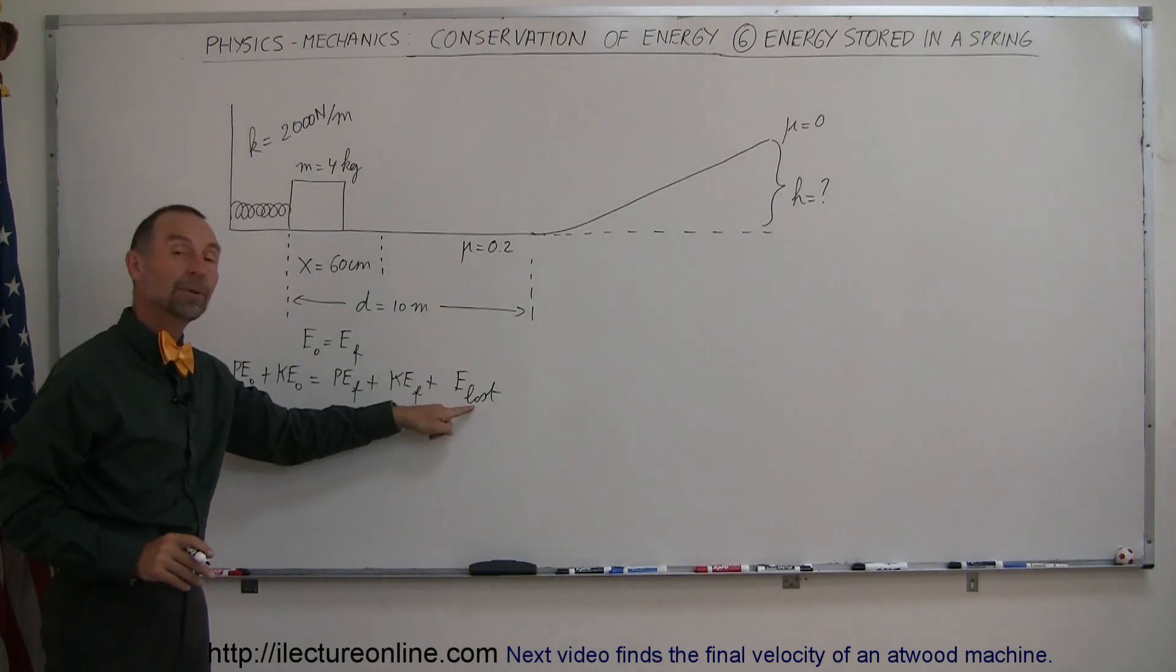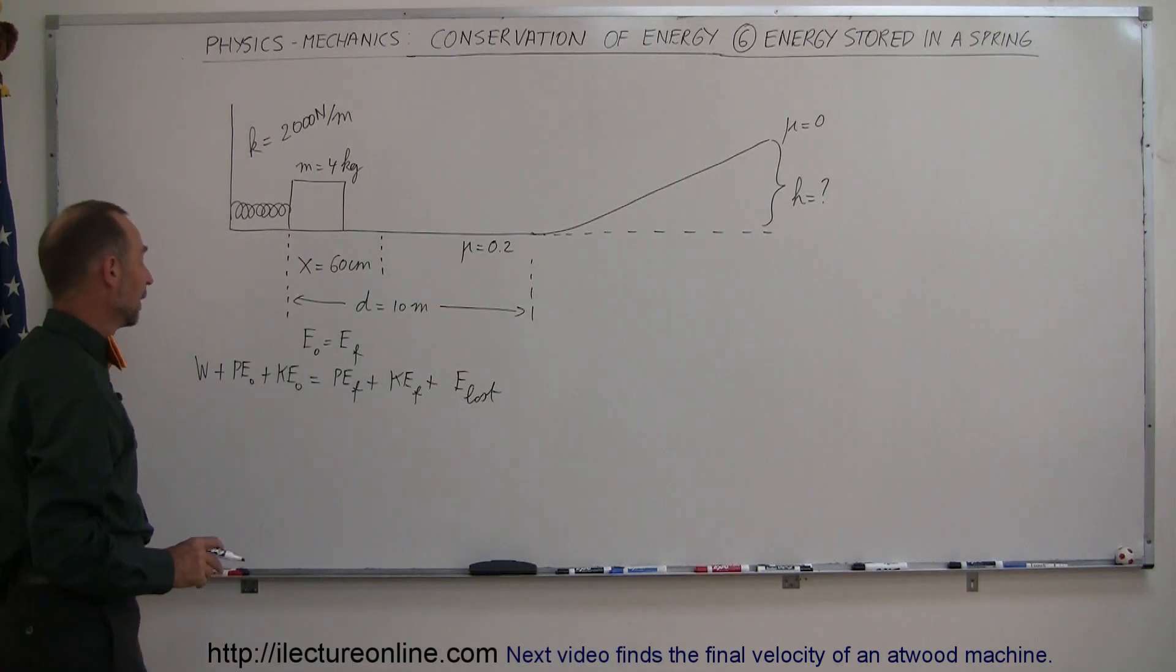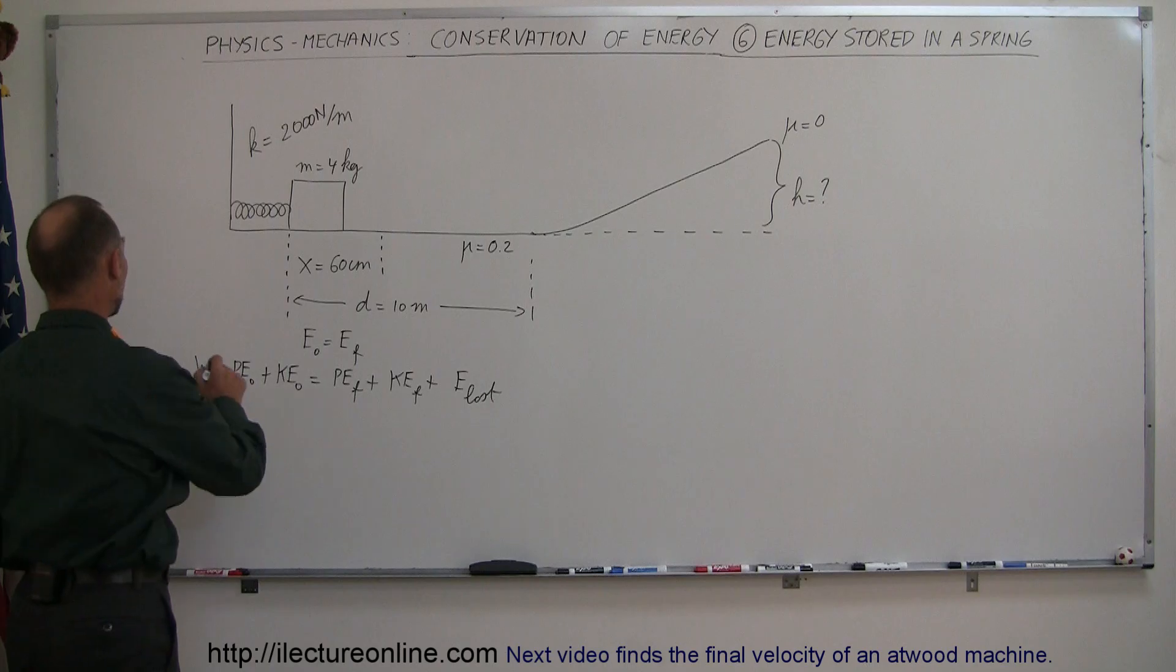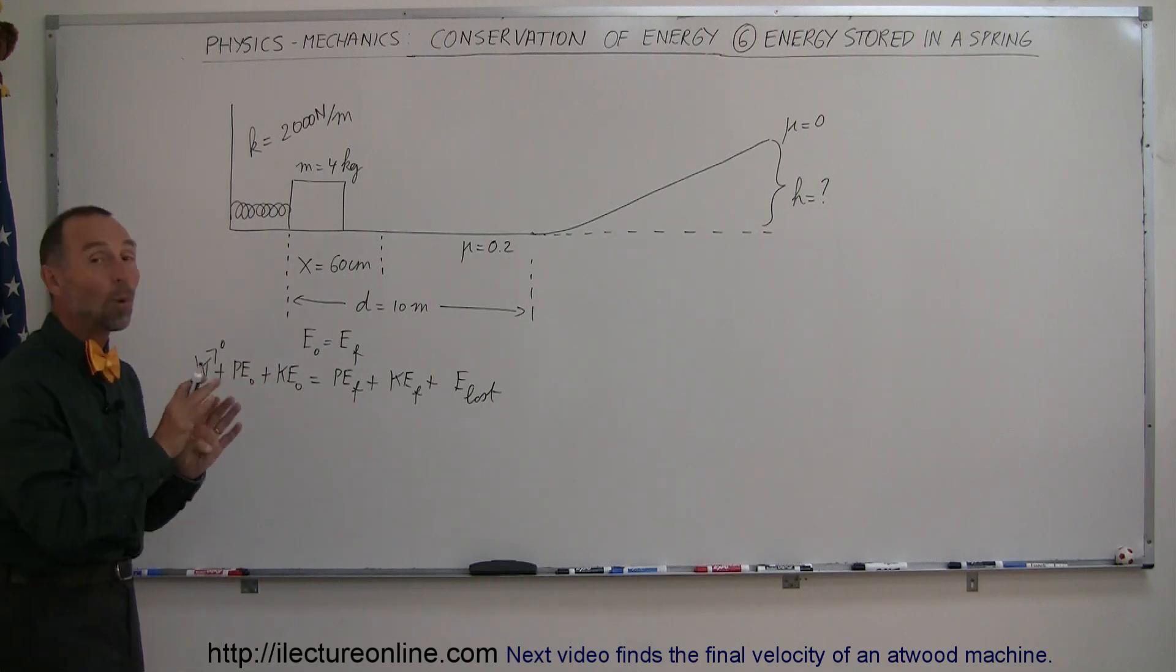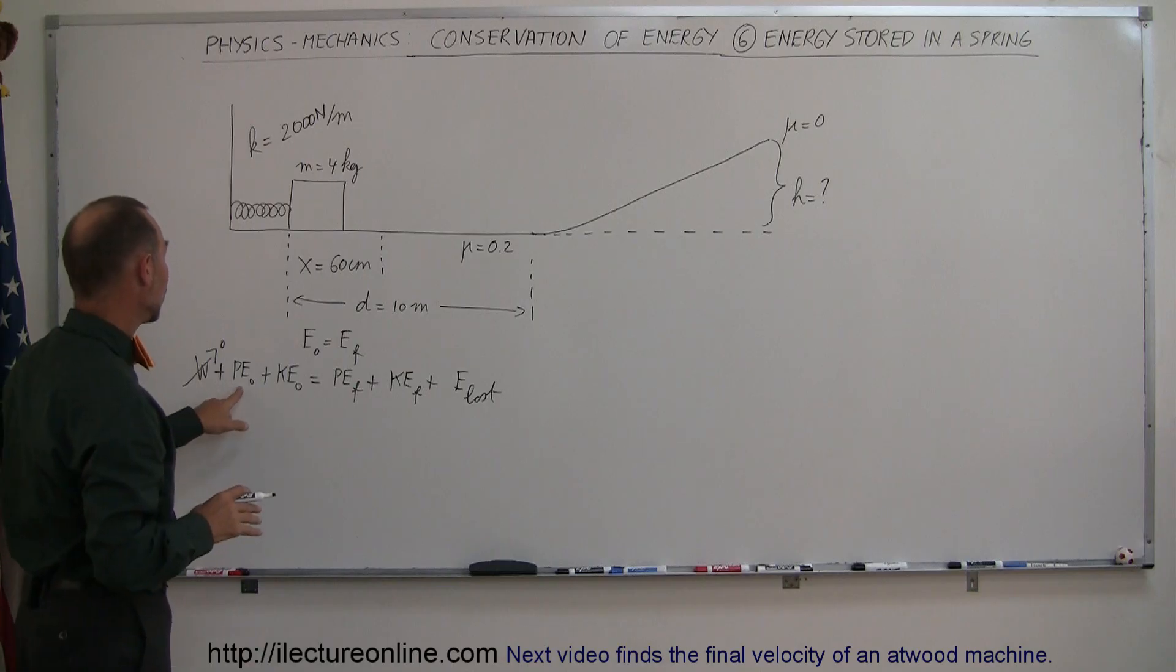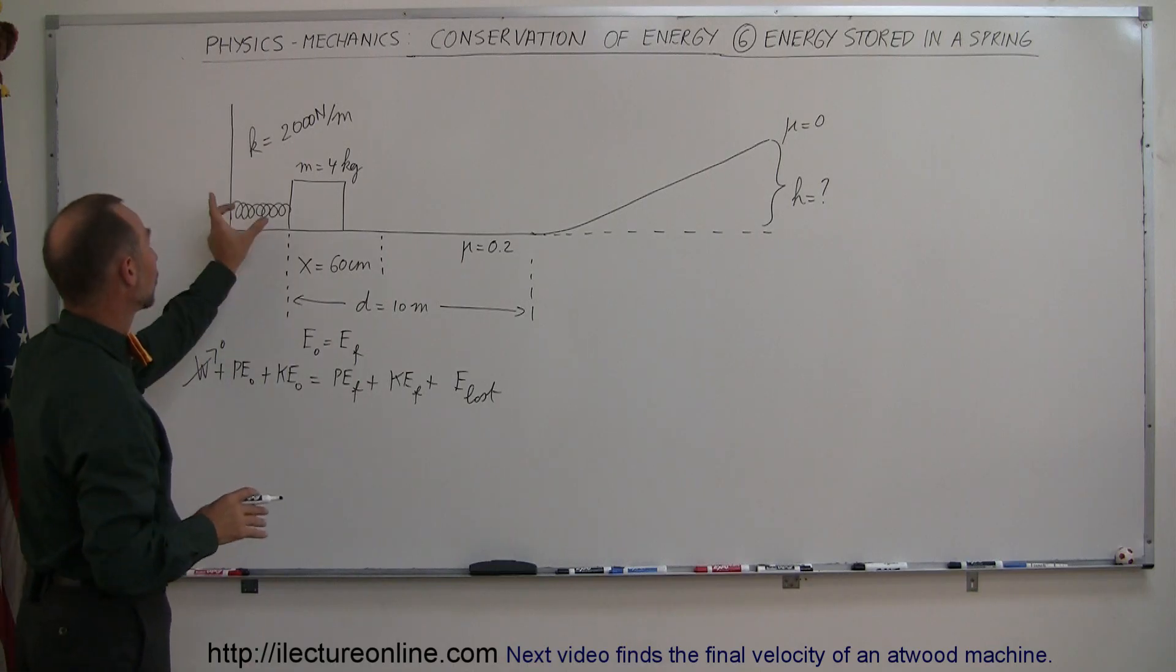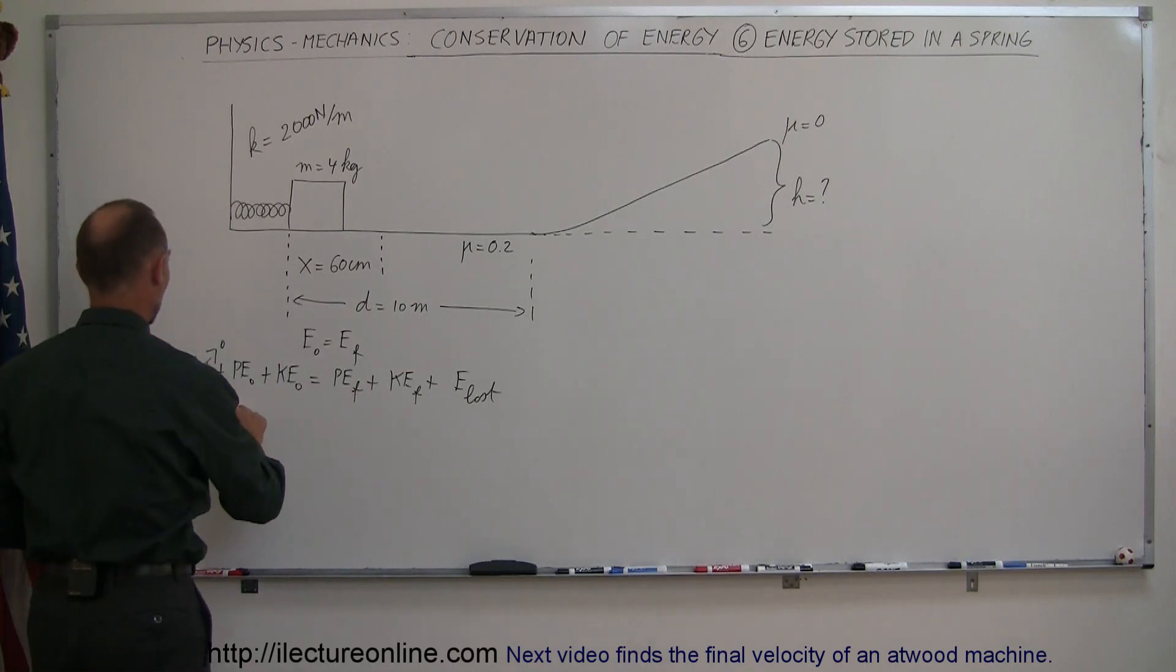We have friction, so definitely there will be something lost right here. Work put into the system, that is equal to 0 because we are not pushing the block while it's moving. Potential energy initial, yes, we have that because there's a compressed spring right here, so we have one-half kx squared.